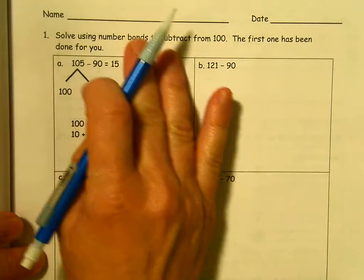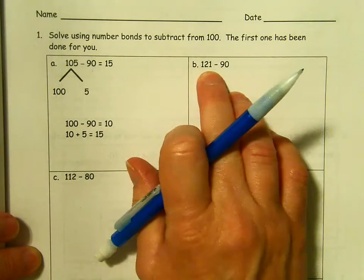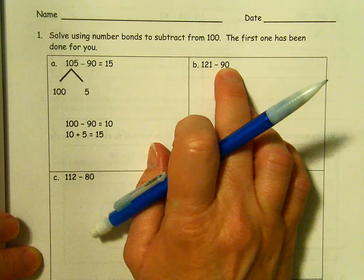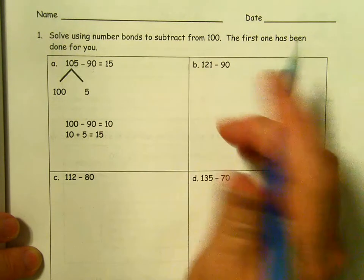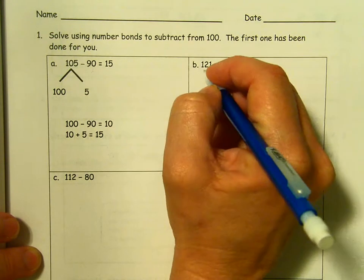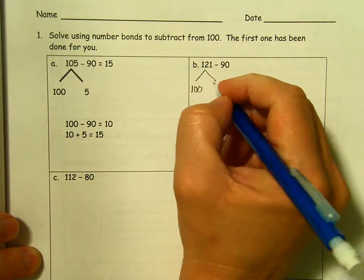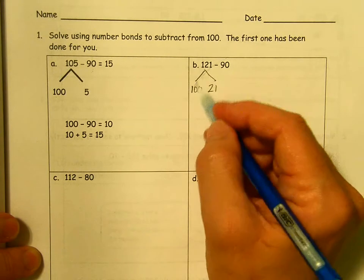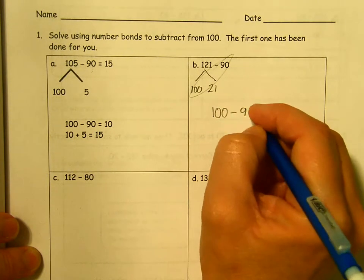We're going to use this same process to do the other problems on this page. 121 minus 90. Again, we want to get this to 100. So we are going to decompose 100 and then what's left, 21.